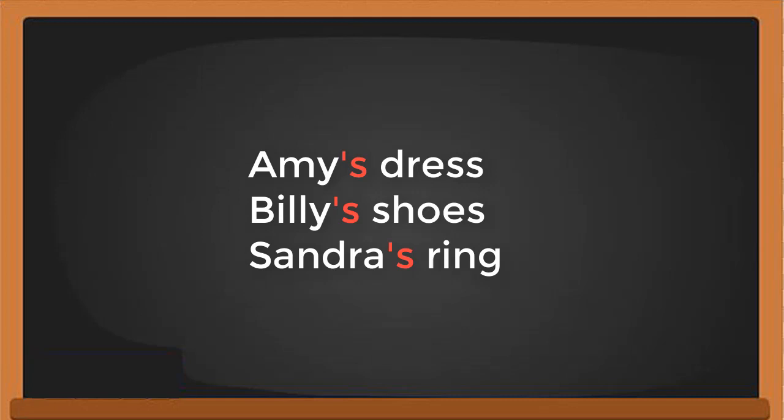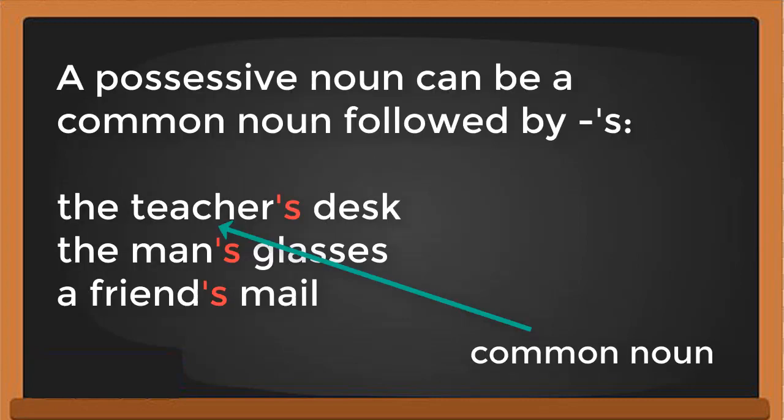For example: Amy's dress, Billy's shoes, Sandra's ring. A possessive noun can also be a common noun followed by apostrophe-s. For example: the teacher's dress, the man's glasses, a friend's mail. Teachers, men, and friends are common nouns; Amy, Billy, and Sandra are proper nouns.